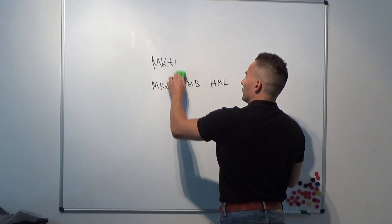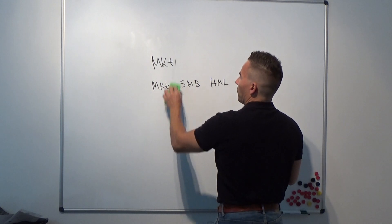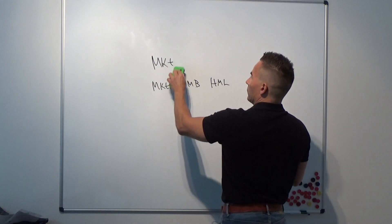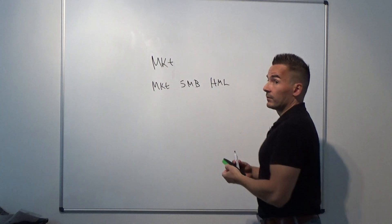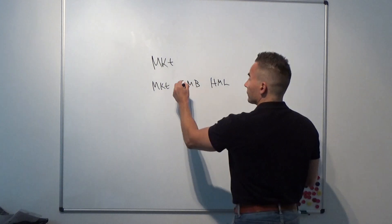We can say that the CAPM nests in the Fama-French three-factor model, because the three-factor model is nothing else than the CAPM plus two additional factors. In asset pricing research, we don't talk about variables — we talk about factors — but it's the same thing.